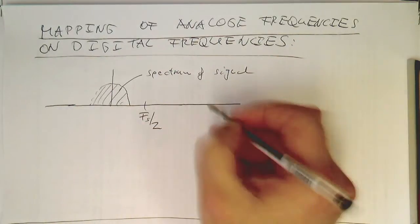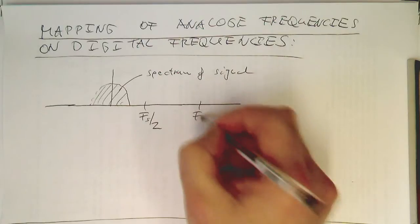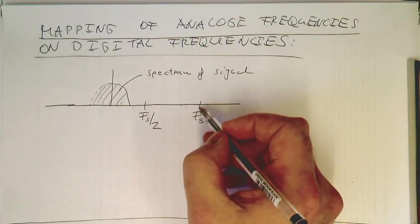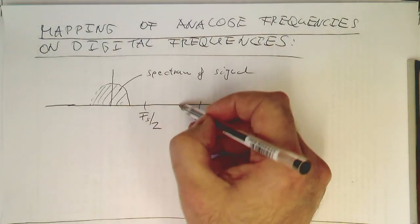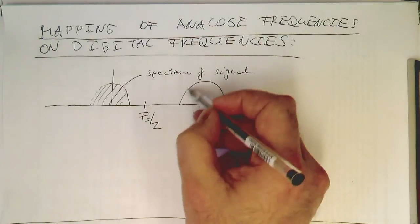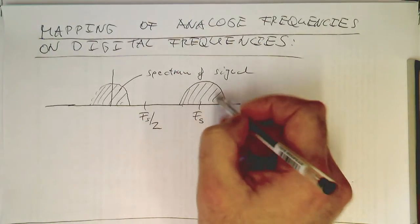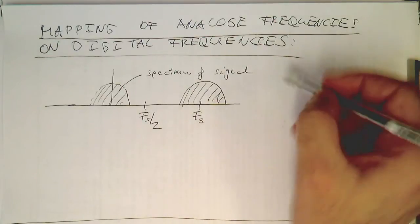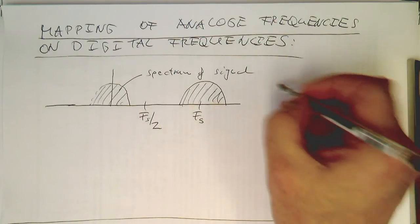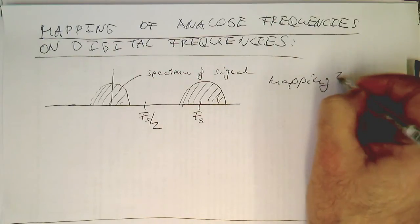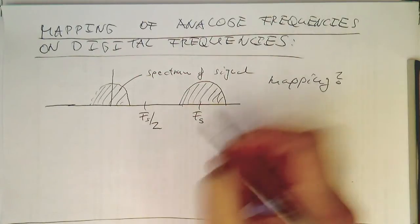So now we know that this could have also arisen from a signal around Fs. So the signal could have also been sitting here in this area. So now let's look at the mapping of these frequencies here.